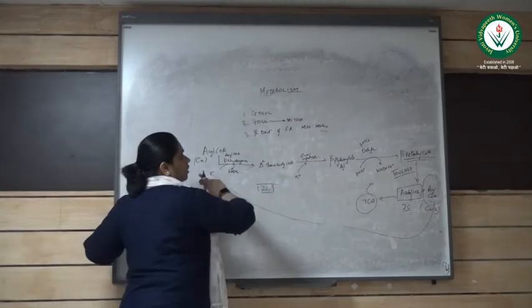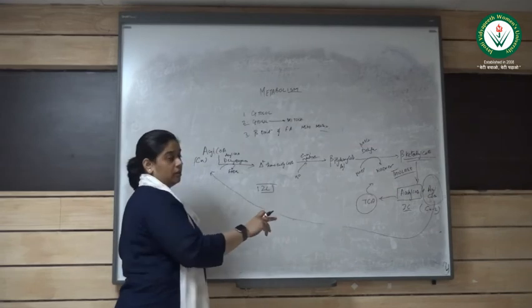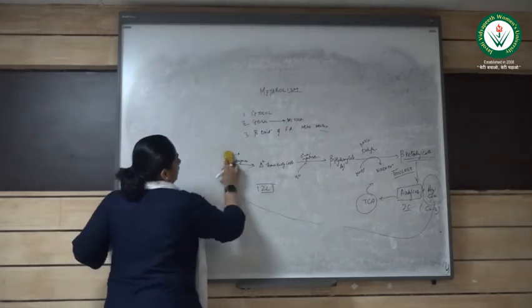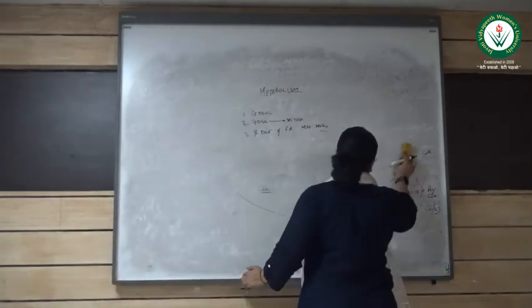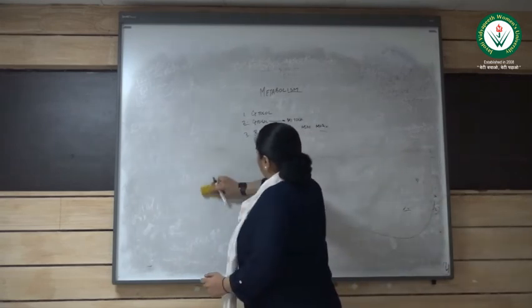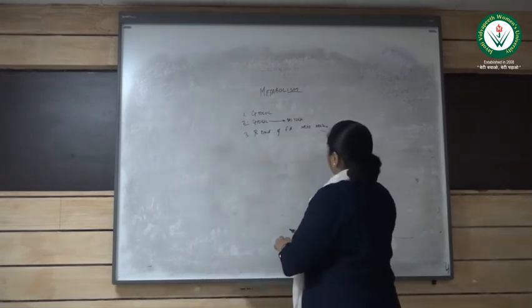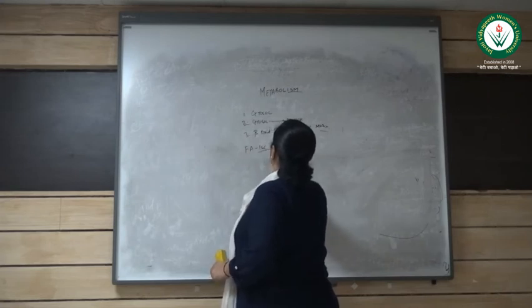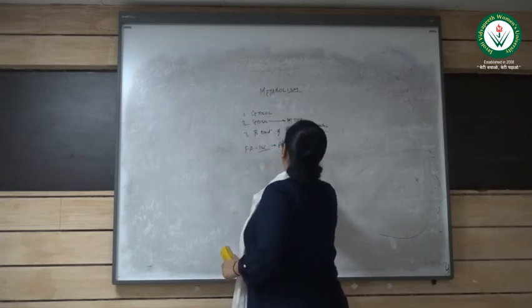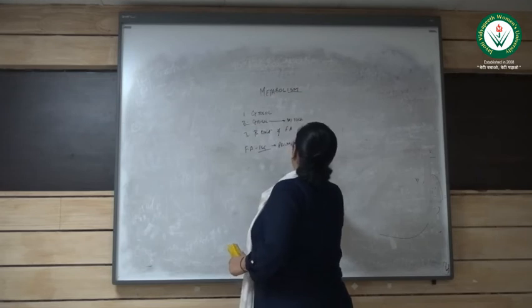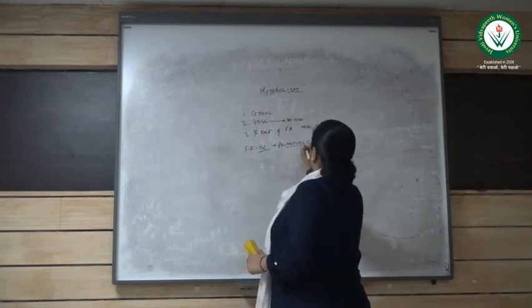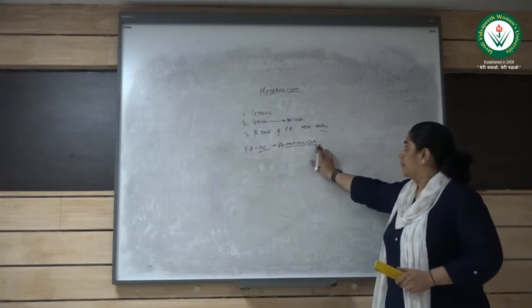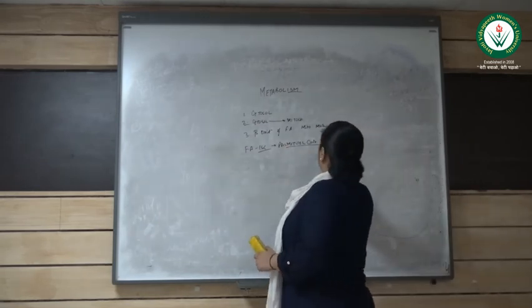Till that the reaction will always continue to go on. So for example if we take a fatty acid chain with the 16 carbons, fatty acid chain of 16 carbon that is the palmitoyl coenzyme A. That is the activated palmitoyl. So this is 16 carbons.